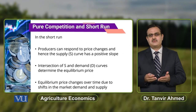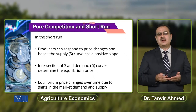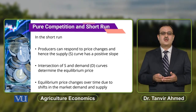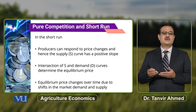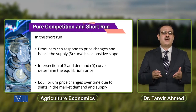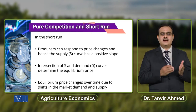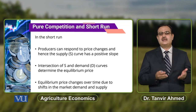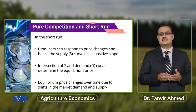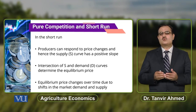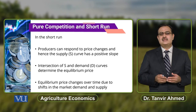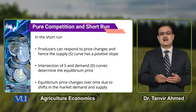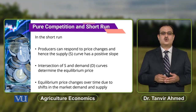Equilibrium उस point पे होगा where market supply is equal to market demand. The point where market supply is equal to market demand, उस point पे जो आपकी price होगी वो equilibrium price कहलाएगी — वो market clearing price कहलाएगी। और उस point पे जो quantity है, that is called equilibrium quantity or market clearing quantity.